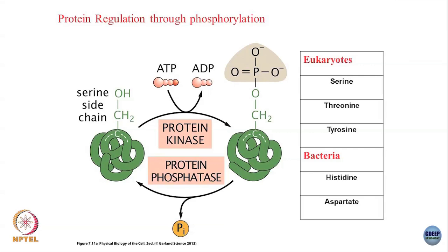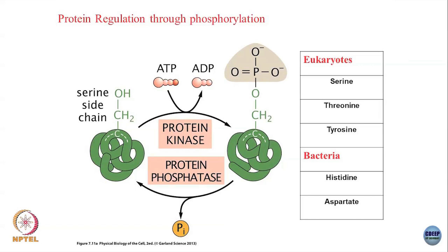Something which was less likely to bind earlier can now become more likely to bind simply by virtue of phosphorylation. This is a class of changes called post-translational modifications. You can have phosphorylation, acetylation, and a whole bunch of other post-translational modifications that you can do to proteins, and these will change the function of the protein. Increasingly, people are realizing that the function of a protein is often very closely tied to these post-translational modifications — whether you introduce a phosphate, an acetyl group, or something else.